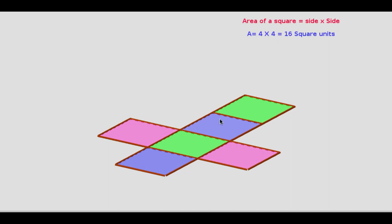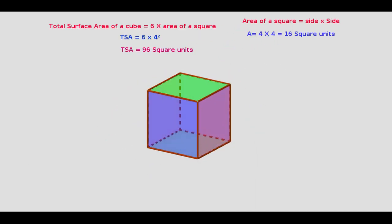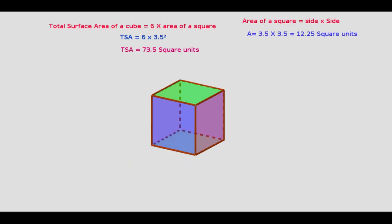Since all are congruent squares, if we add a² six times, that gives the total surface area of this cube: TSA = 6a². The unit of measurement is square units. Observe, as the length changes, the area also changes.